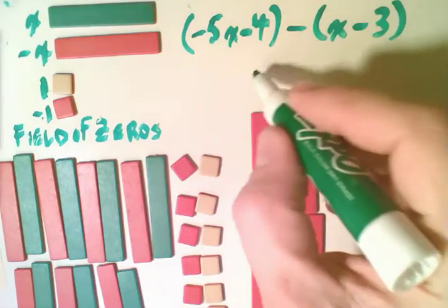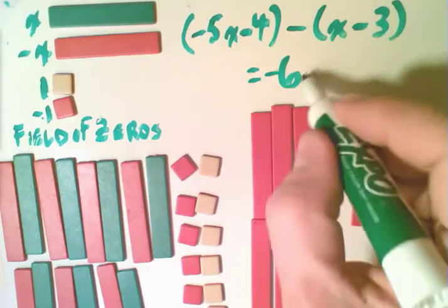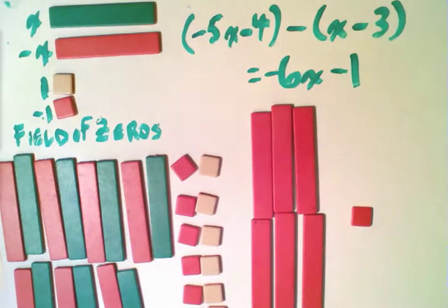And so we have, or sorry, negative 6x. Negative 6x and subtract 1 as our final answer. And we've done that conceptually because we are actually still dealing with the concept of taking away. We're not subtracting a negative or doing anything like that. We're actually keeping true to the physical nature of what subtraction is.